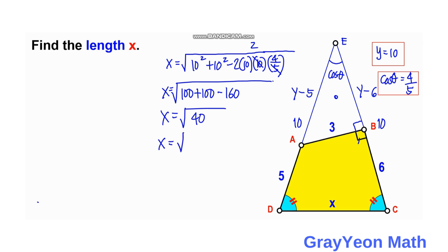By factoring 40 as 4 × 10, and since 4 is a perfect square, we take it outside the radical sign. So X = 2√10 units, and that is our answer.